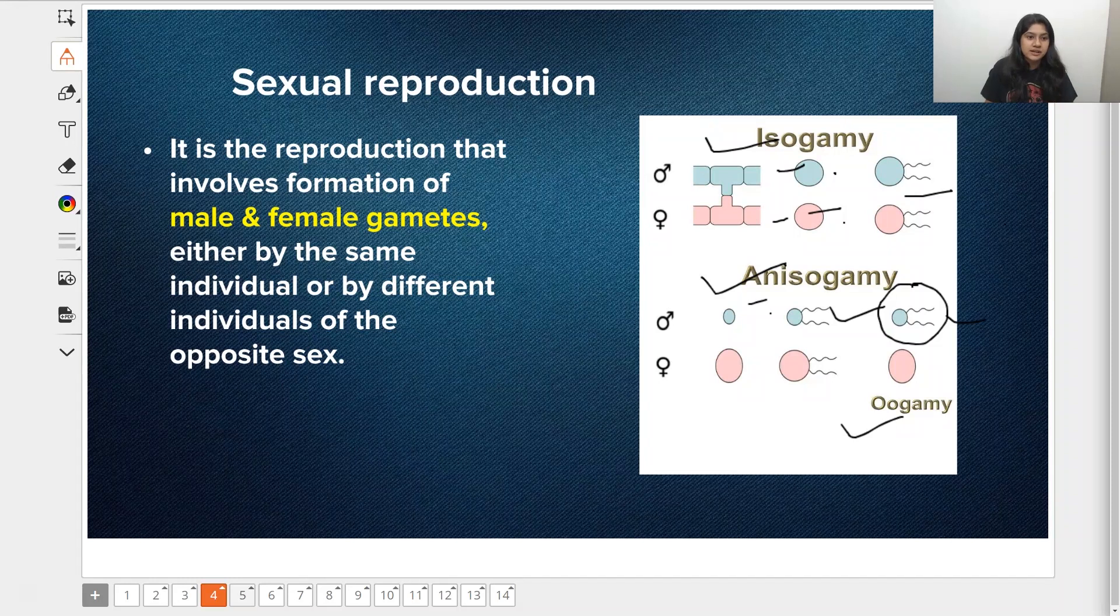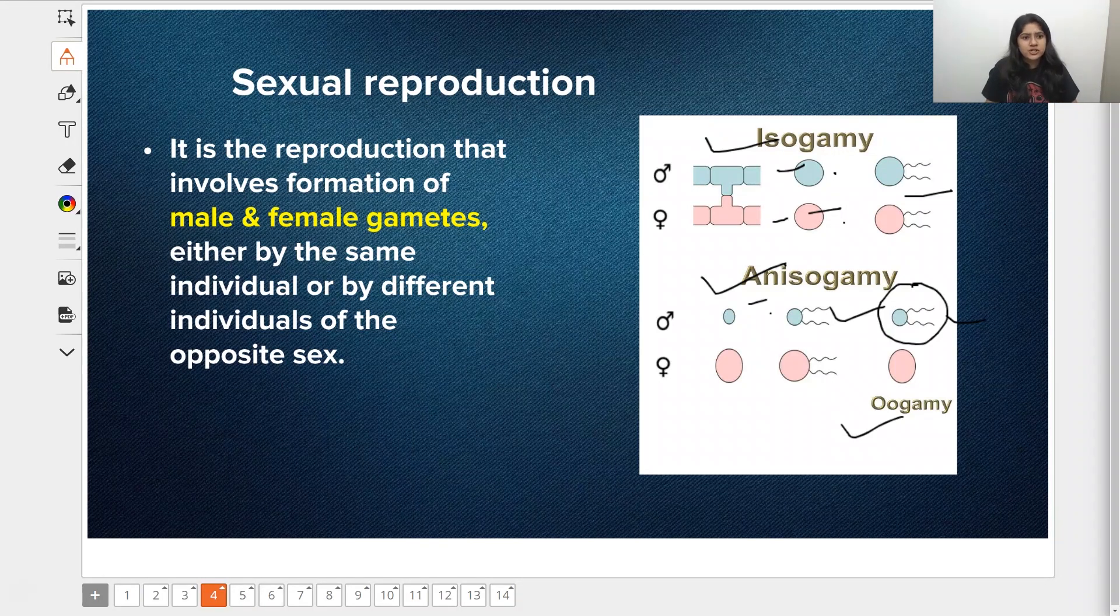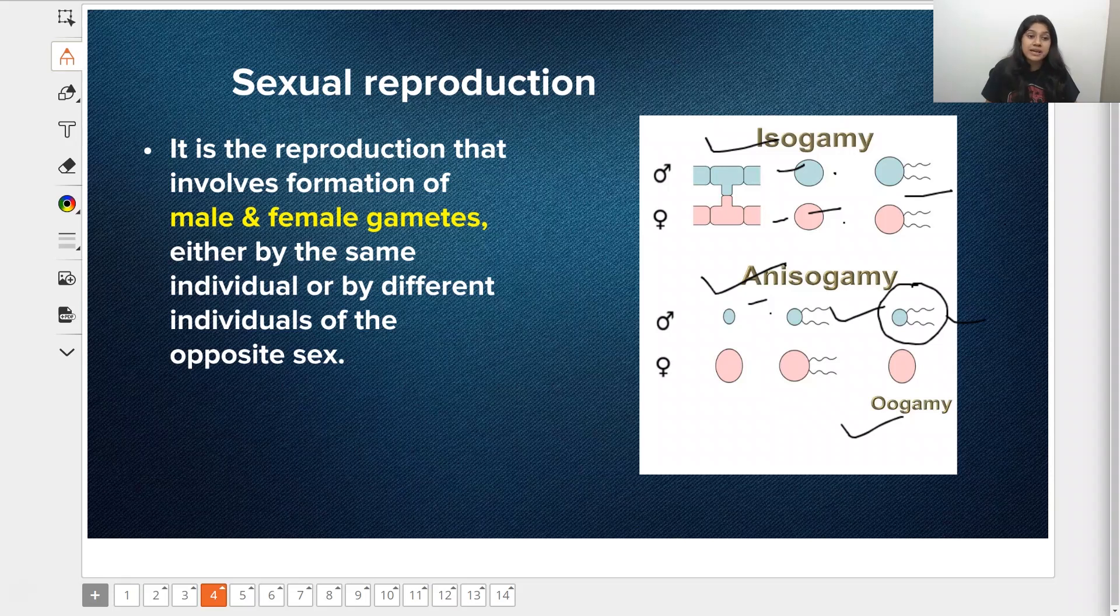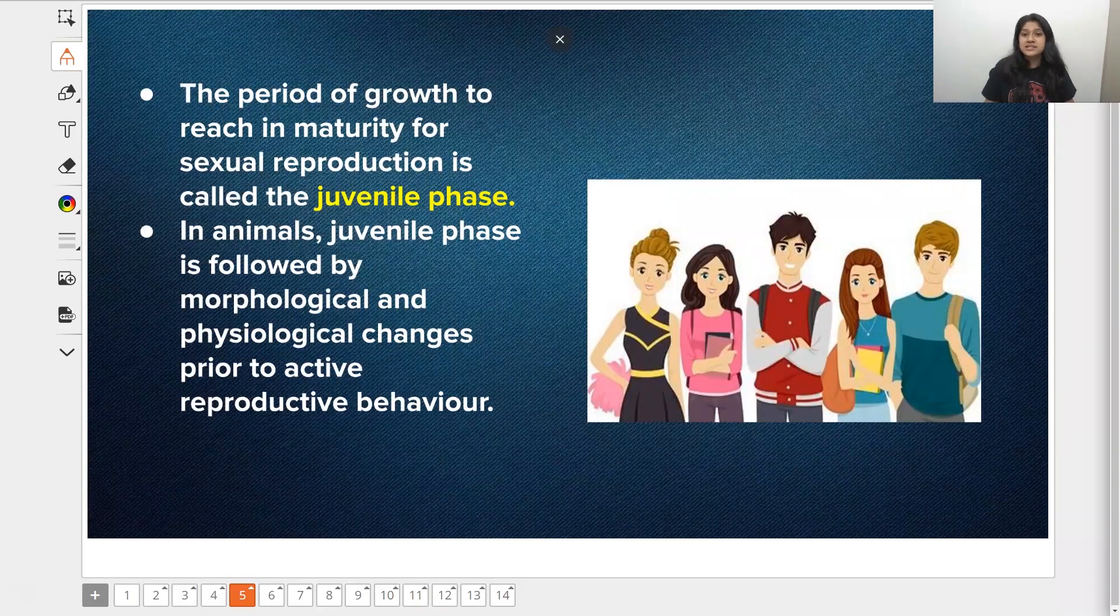It's very easy to understand what sexual reproduction is. If you want me to read this from the screen, it's reproduction that involves the formation of male and female gametes, either by the same individual or by different individuals of the opposite sex. Great, let's move ahead.